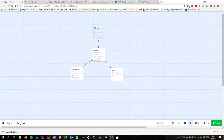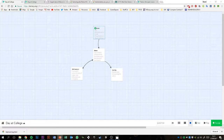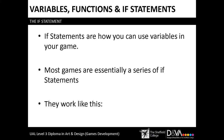Welcome back to this Twine tutorial video series. This video is about if statements, or conditions as they're sometimes called. An if statement is just another way you can use variables in your game. It's a way you can check if your variable values are a specific value, and if they are, then you can tell the game to do something.